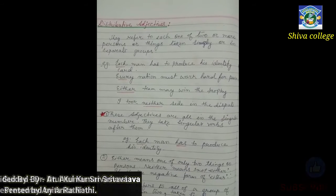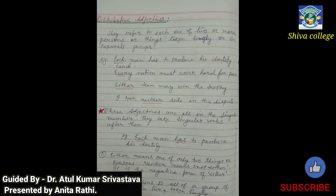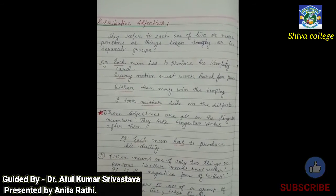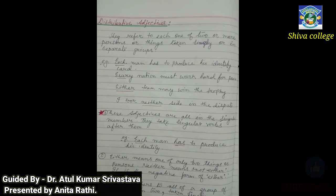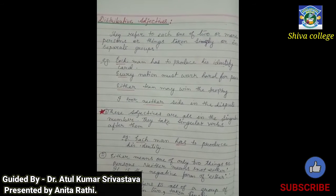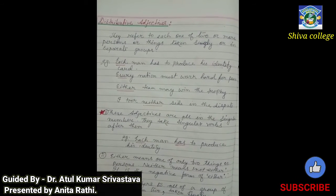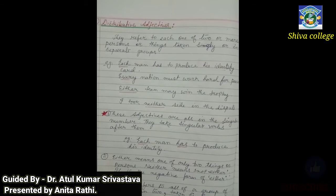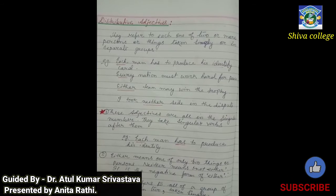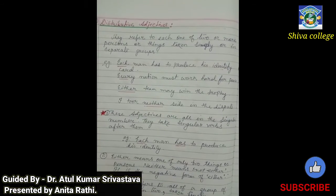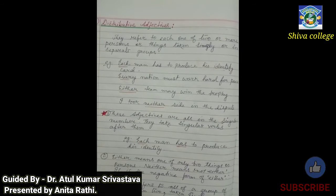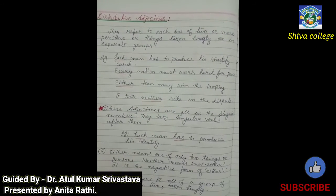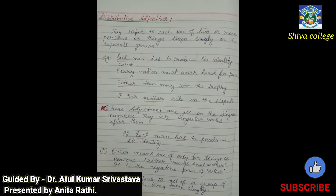'Every nation must work hard for peace' — every nation is also talking about each nation. 'Either team may win the trophy' — either team means any one of two teams. 'I took neither side in the dispute' — neither side means none of them. So these adjectives are all in the singular number and they take singular verbs after them.